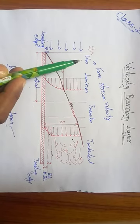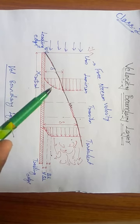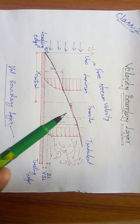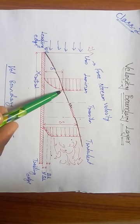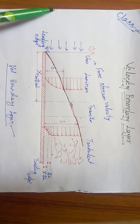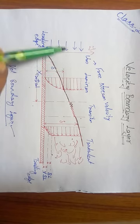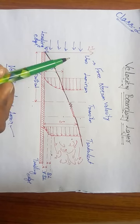The word 'infinity' doesn't mean the fluid goes beyond the atmosphere, crosses the skies, or goes to the universe—it is not like that. It refers to the point where the flow velocity becomes approximately equal to the velocity with which the air is being blown. When those two values are almost equal, we call that the infinite distance.